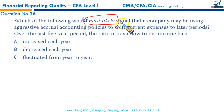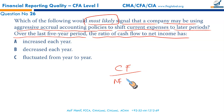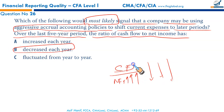Which would most likely signal that a company is using aggressive accrual accounting policies to shift current expenses to later periods? Over the last five periods, the ratio of cash flow to net income — if net income is rising steadily due to aggressive accrual, and cash flow remains consistent, this ratio will decline over the period. If net income is artificially inflated, the denominator increases progressively, so the ratio decreases each year. B is the correct option.